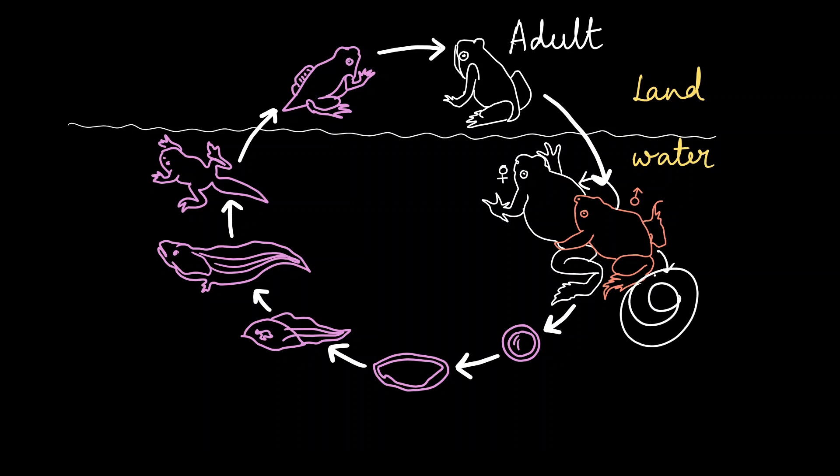They fertilize to form this zygote. The zygote then develops and it forms a tadpole and we can see that these tadpoles look almost like fishes. They use gills for their breathing and they have a fin and a tail and they move around in the water.